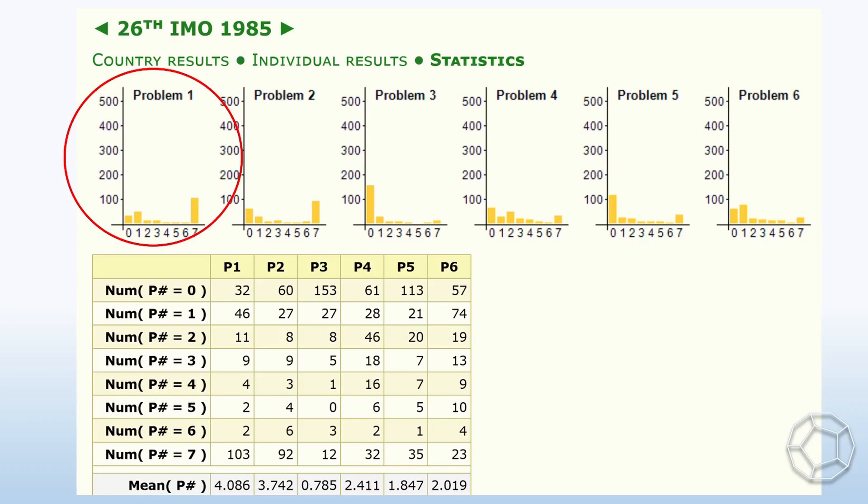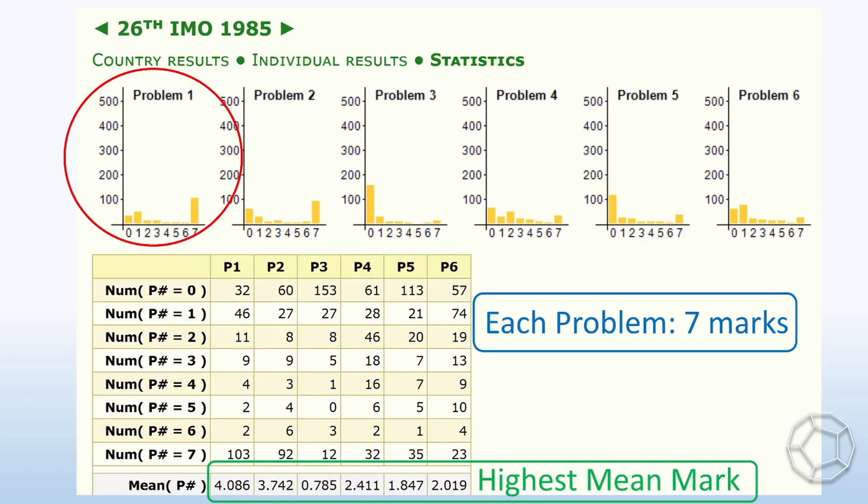Why? Let's take a look at the statistics from the IMO official website. Each problem is worth 7 marks. The mean mark of this problem is 4.086, which is the highest among all 6 questions.